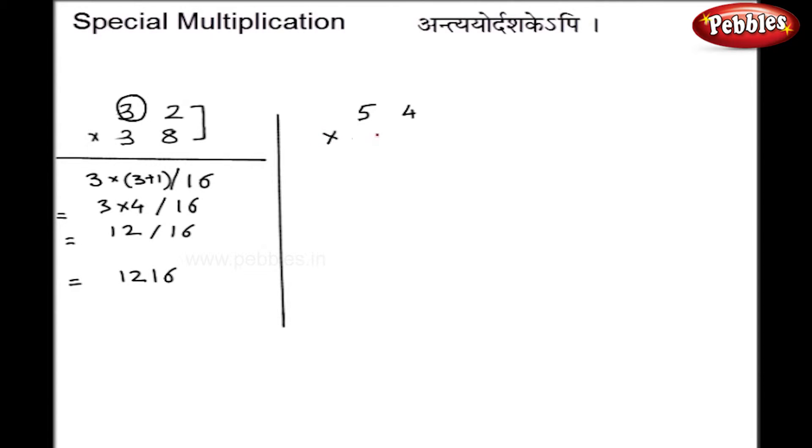Let me take another example, 54 into 56. In this case, 6 plus 4 is 10 and 5 is common. I will split my answer: 6 into 4 is 24, and 5 into 6, that is 5 plus 1. Here I get 30 and right hand side 24. So my answer is 3024.